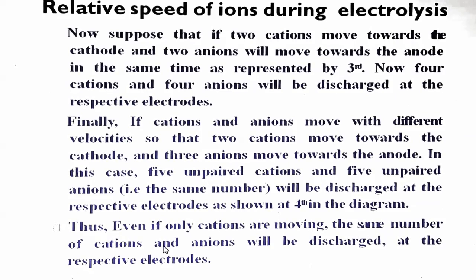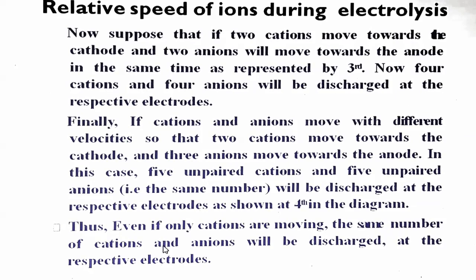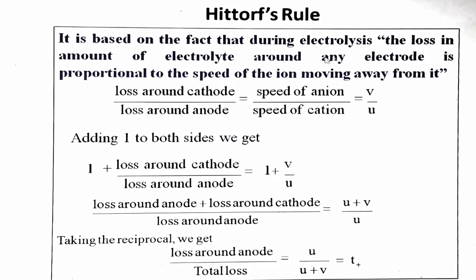Even if only cations are moving, the same number of cations and anions will be discharged at their respective electrodes. This method is based on relative speed of ions. If only cations are moving, then the same number of anions will also be discharged at their respective electrodes. According to Hittorf's rule, during electrolysis, the loss in amount of electrolyte around any electrode is proportional to the speed of the ion moving away from it.